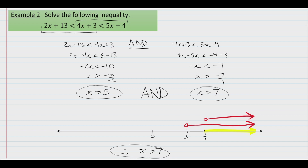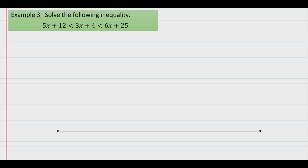Let's move on to our third example. In example number three, we have a situation similar to example two. The value of x on the left and on the right side of the double inequality are different — we have a 5x and a 6x. So let's take the same approach we did in example two and split this into two separate linear inequalities: 5x plus 12 less than 3x plus 4, and simultaneously 3x plus 4 less than 6x plus 25.